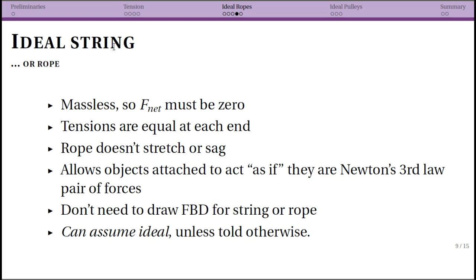The first big takeaway for an ideal rope or string is that it is massless, and so the net force on the rope or string is zero. That's because F equals ma - if it is accelerating, the only way this can work is if F_net is zero if it has no mass. So the mass of the rope or string is zero, F_net is zero, and that allows our tensions to be equal at each end.